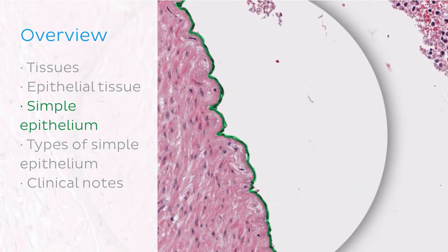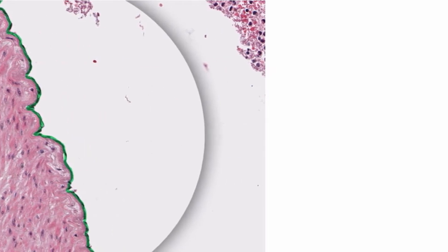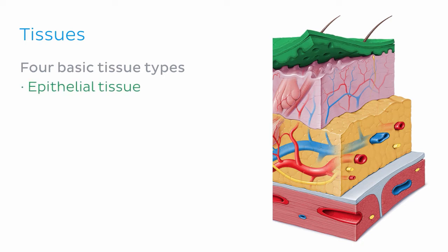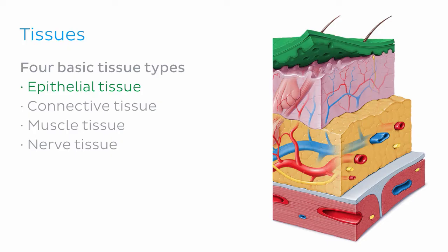First I'll set the scene by talking about what epithelial tissue is and how it relates to other tissues of the body. There are four basic tissue types that make up the organs and tissues found in the human body: epithelial tissue, connective tissue, muscle tissue, and nerve tissue.